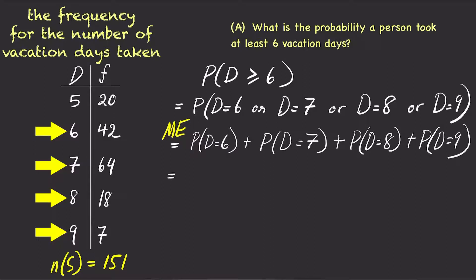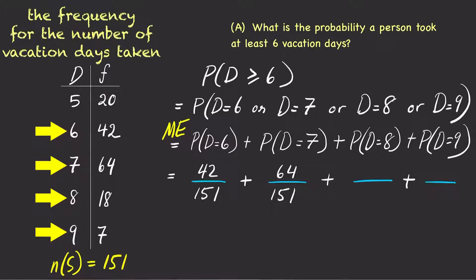For d equals 6, the probability is 42 over 151. For d equals 7, the probability is 64 over 151. Take a minute and fill in the probabilities for d equals 8 as well as d equals 9.